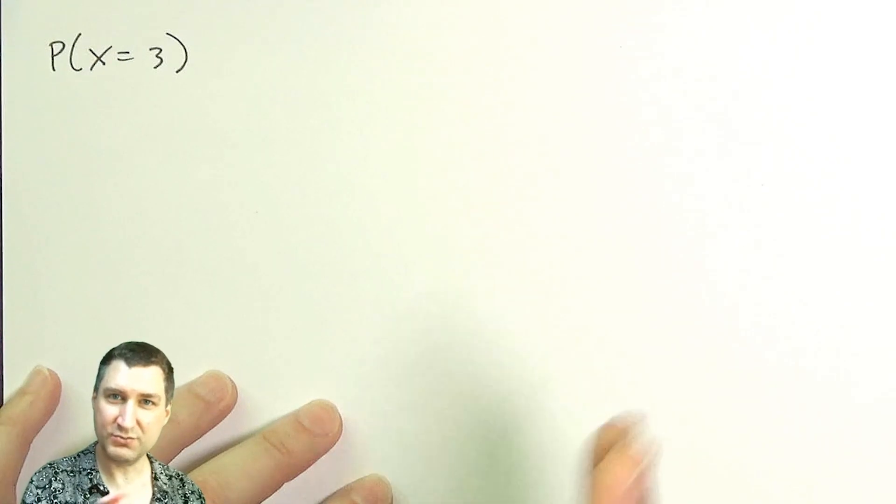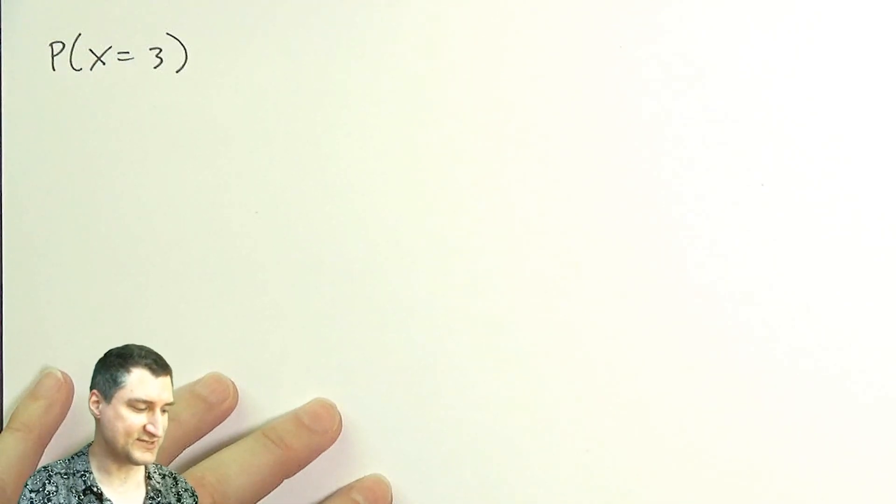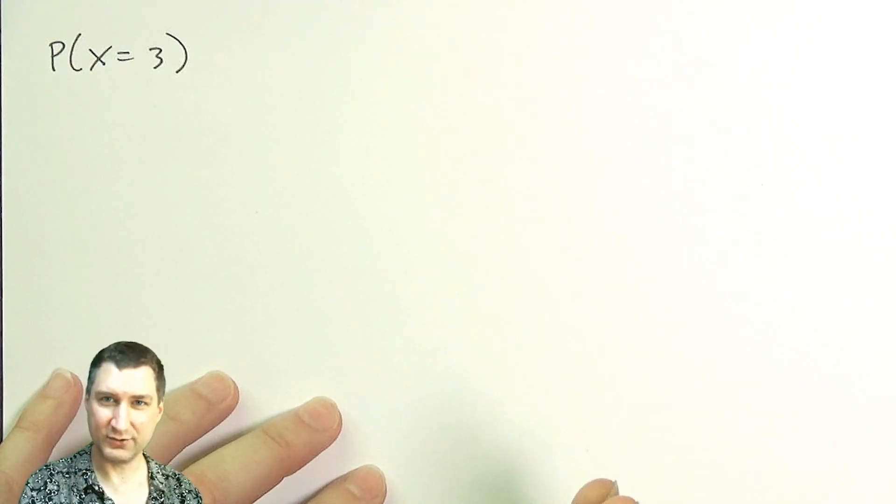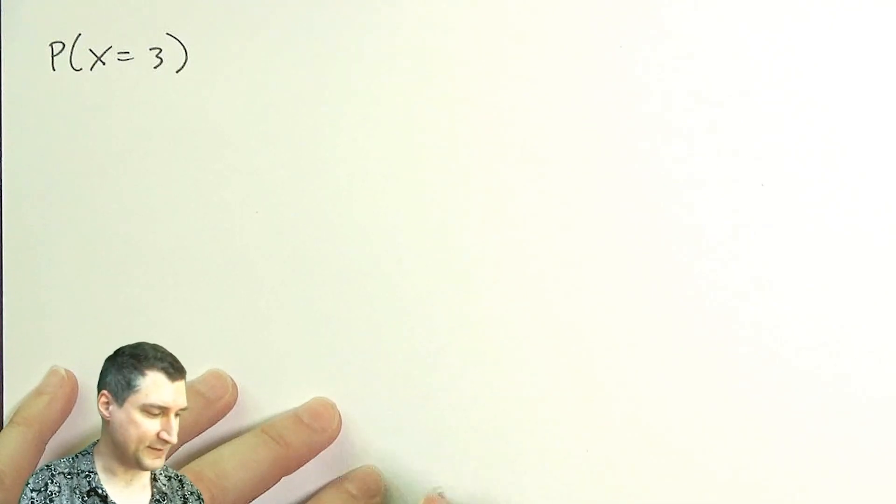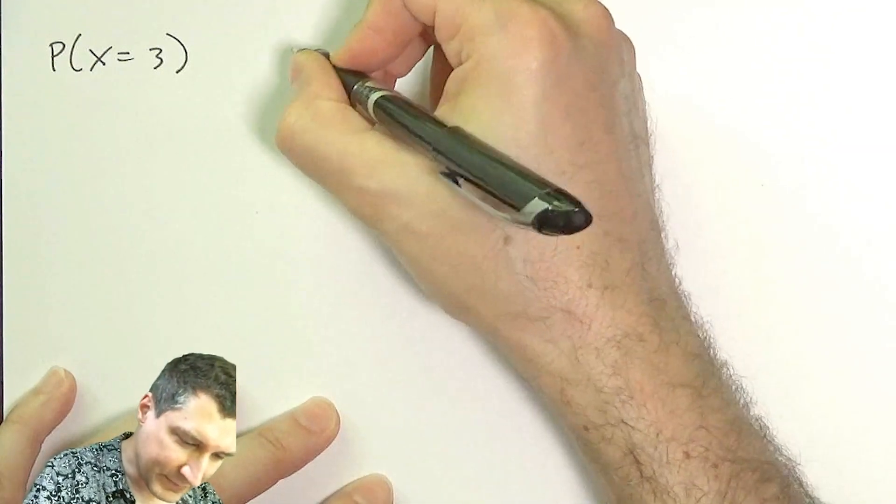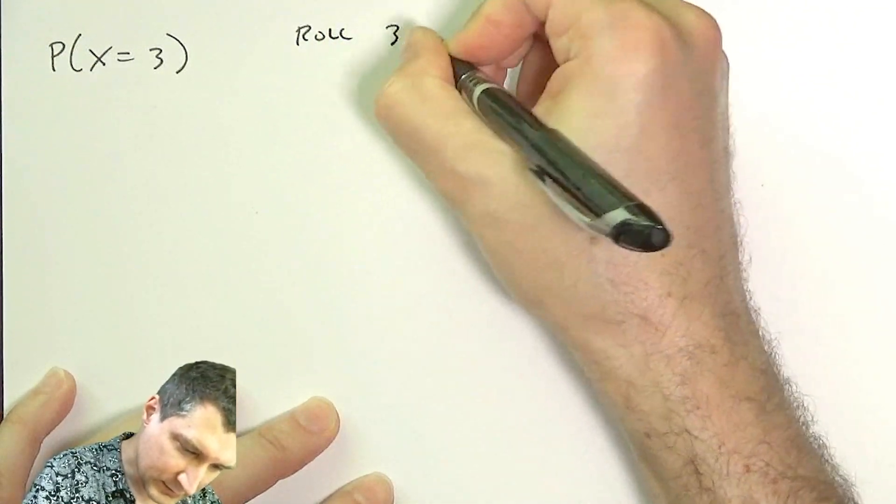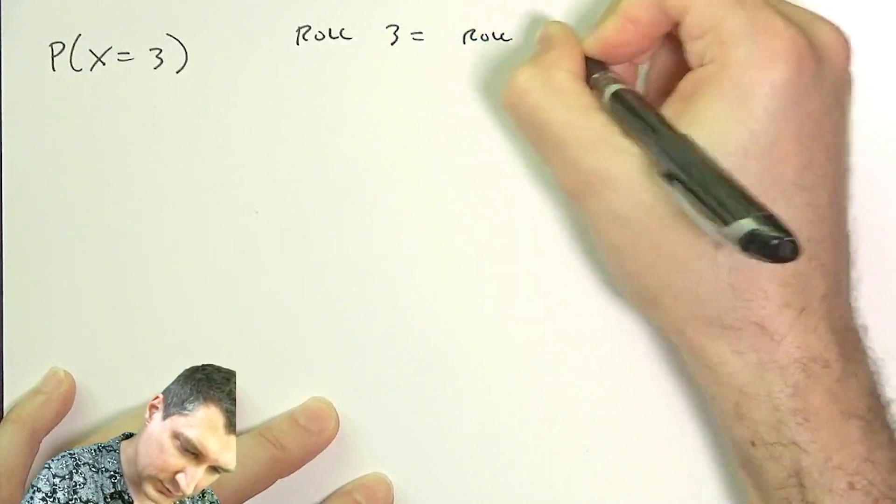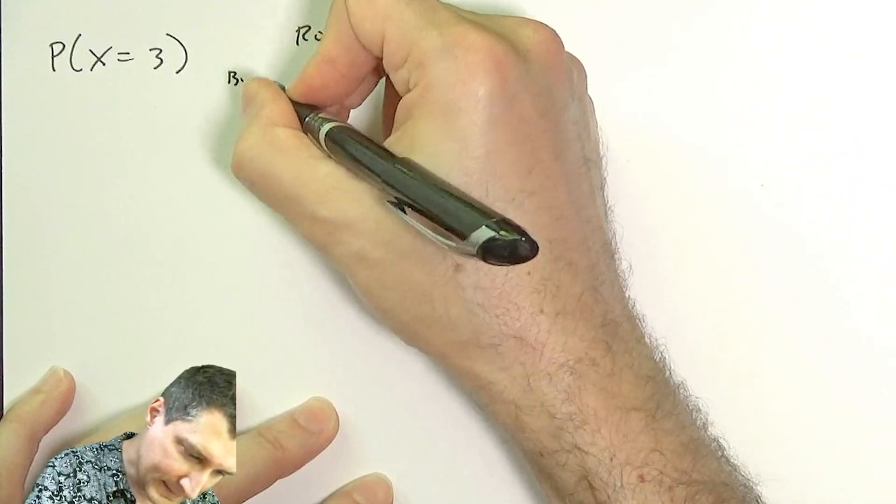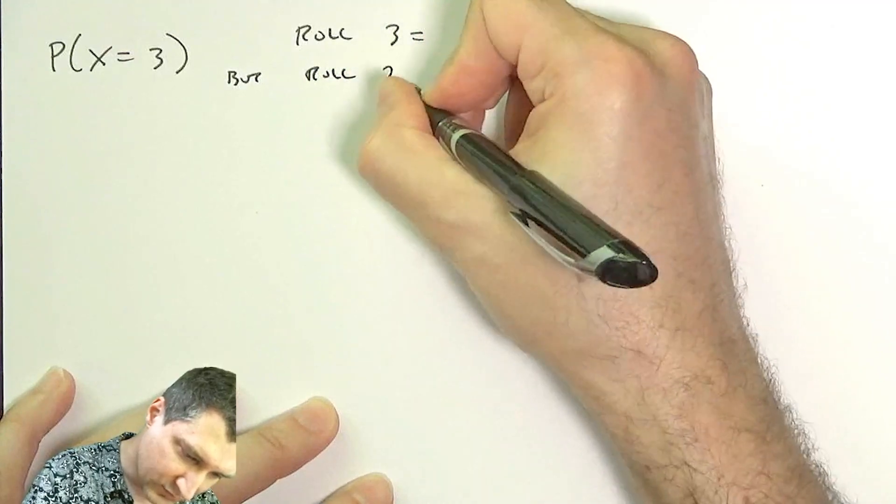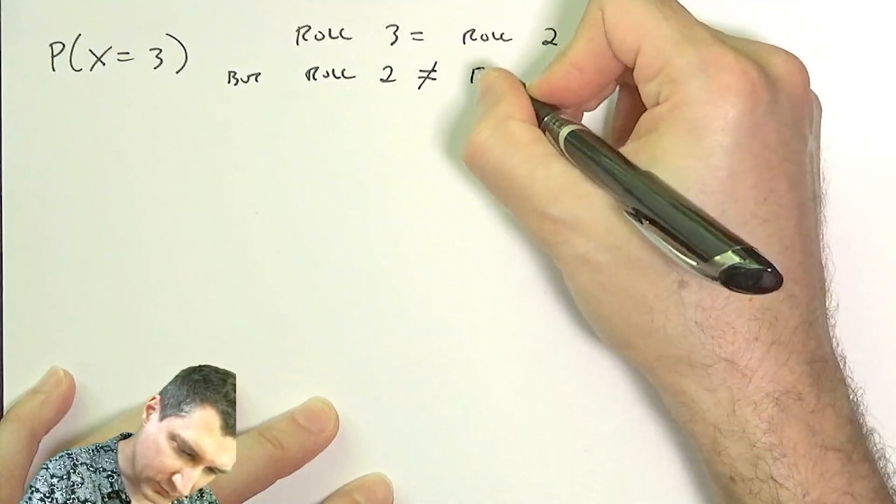In some sense, this is like saying I failed on roll 2 and I succeeded on roll 3. So roll 3 equals roll 2, but roll 2 was not equal to roll 1.